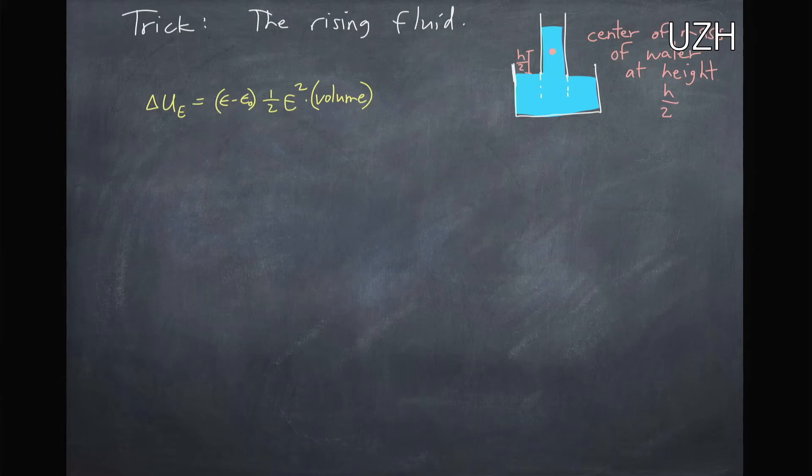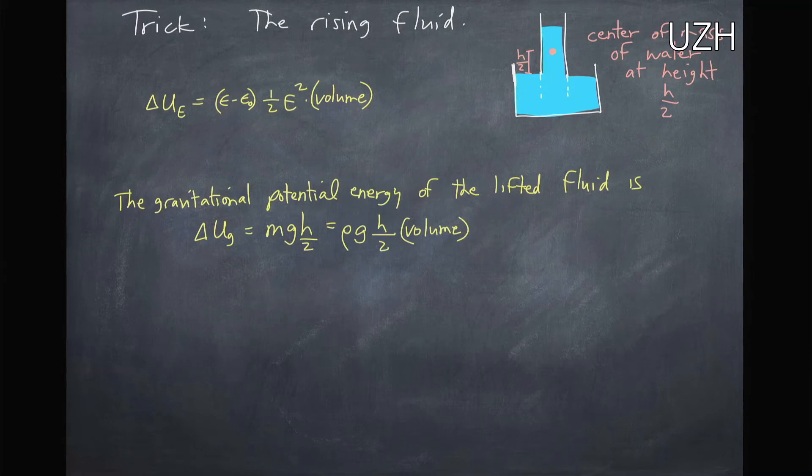So in this case we take this volume of liquid and we raise the center of mass of this volume of liquid up a height h over 2. So this height that we increase the fluid, half of that is where the center of mass is. The gravitational potential energy of this lifted fluid is just mg, the force, times the distance that it traveled which is h over 2. So this total energy, the mass is the density times the volume, so I can rewrite this with rho g h over 2 times the volume. Now I have these two amounts of energy.